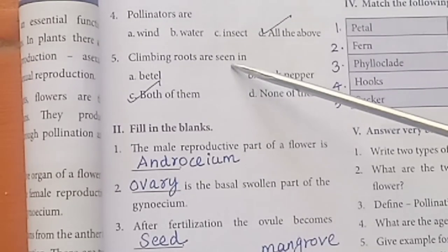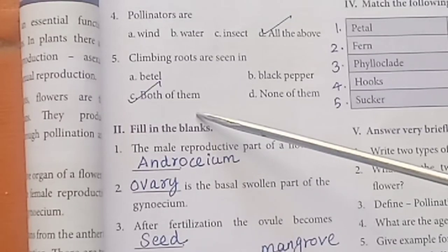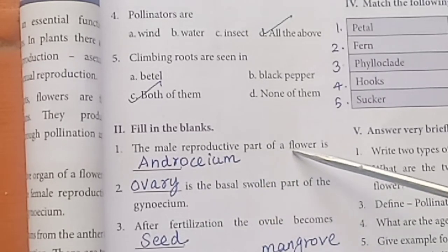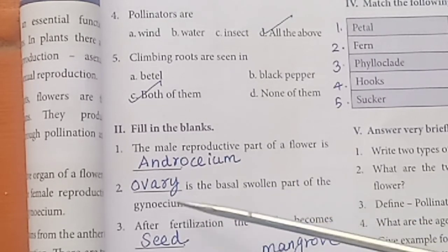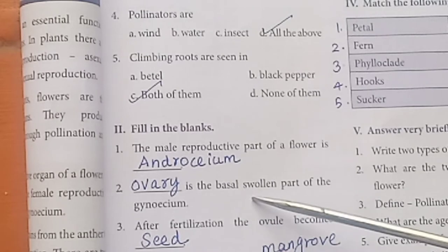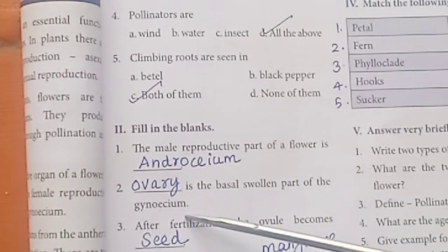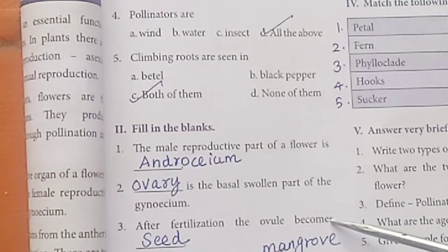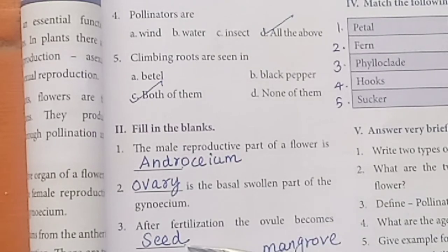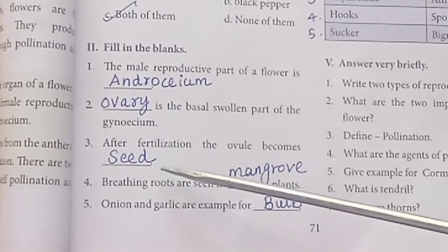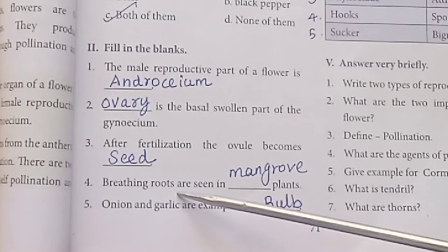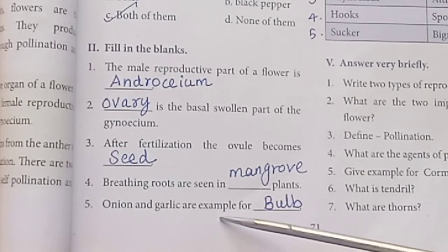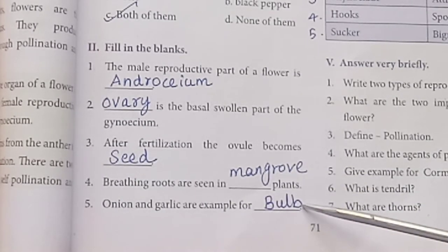Climbing roots are seen in both. Fill in the blanks: The male reproductive part of the flower is the androecium. The ovary is the basal swollen part of the gynoecium. After fertilization, the ovule becomes a seed. Breathing roots are seen in mangrove plants. Onion and garlic are examples of bulb.